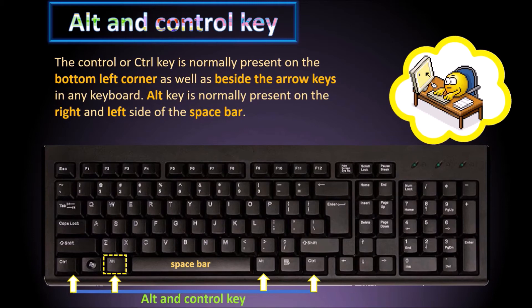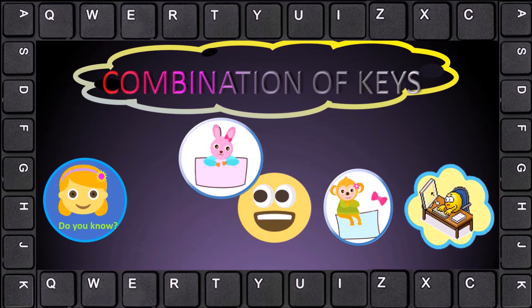The Control key is normally present on the bottom left corner as well as beside the arrow keys on any keyboard. The Alt key is normally present on the right and left side of the Space bar. These keys are mainly used in combination with other keys to perform many useful functions.